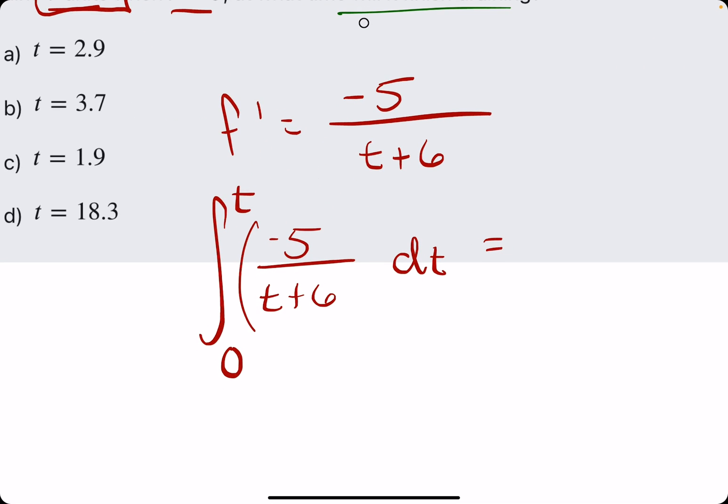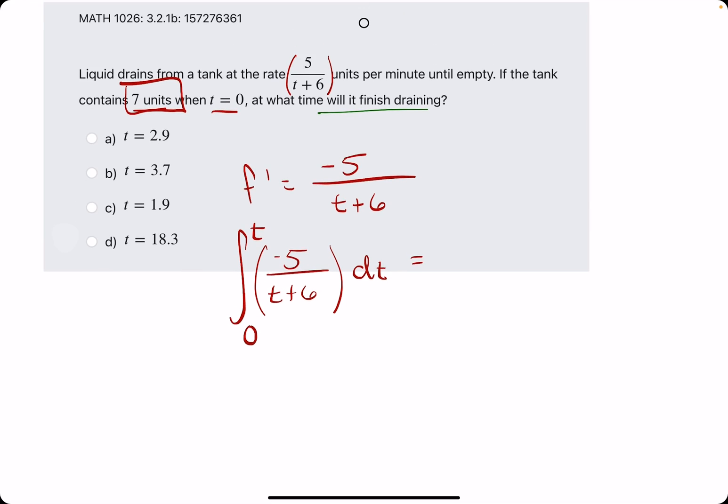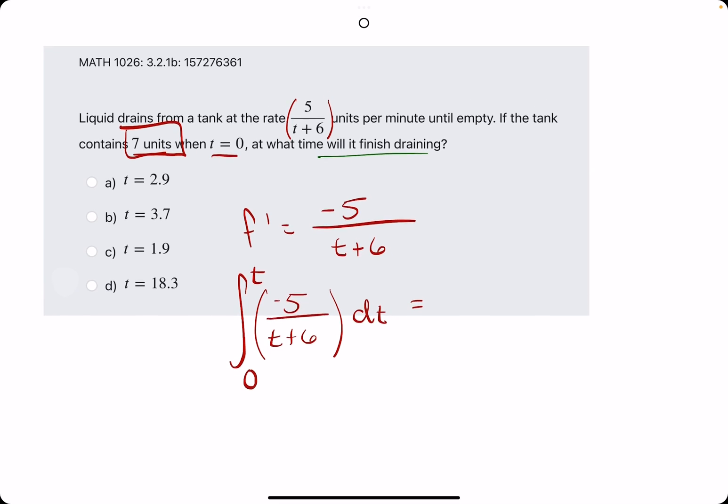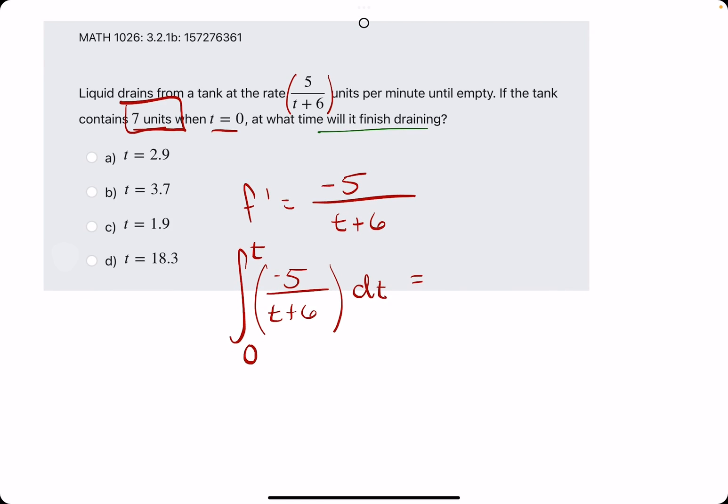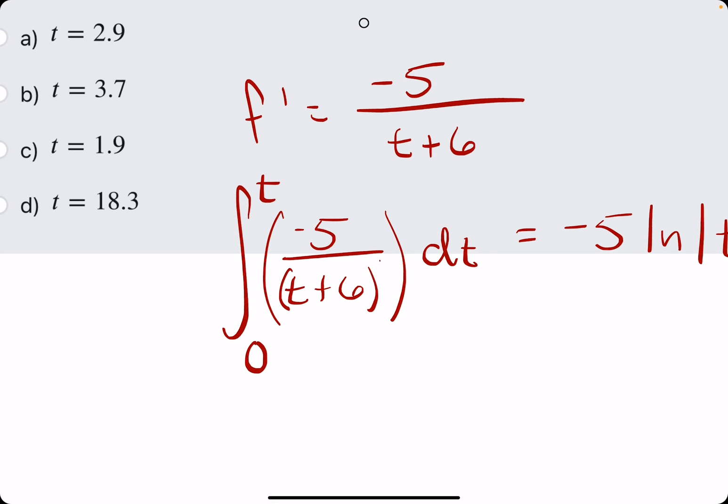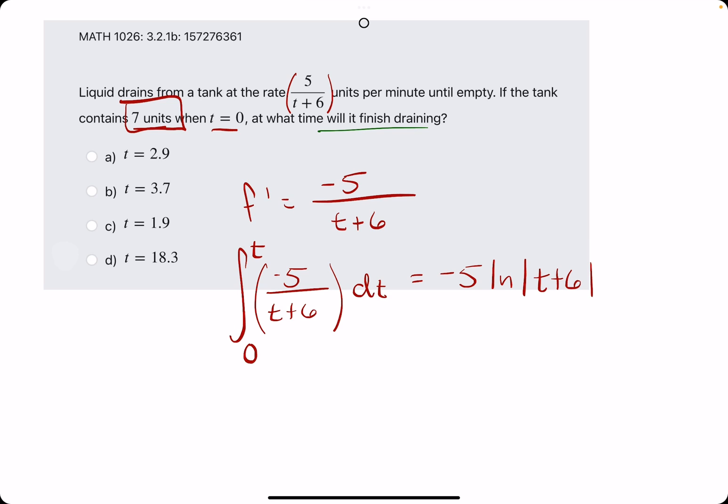We could use substitution, but we've really just jumped to using natural log of the denominator when it's just a denominator that's raised to the first power. In other words, the t is raised to the first power. When you have just a t plus six on the bottom, then you can just use ln of t plus six.